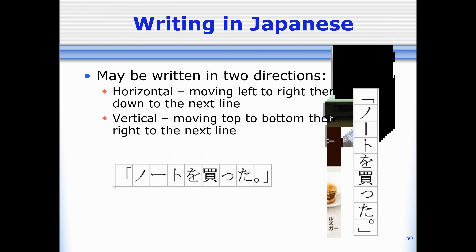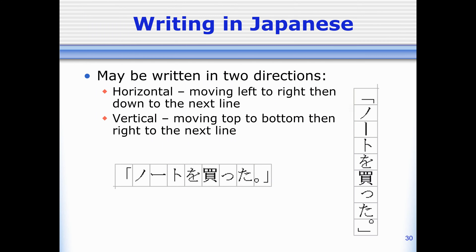Just FYI, when we read in Japanese, we can go either straight up and down or horizontally — each one is okay. When the writing is horizontal, we read left to right, just like English. When it's vertical, which is the more traditional style, we read right to left.